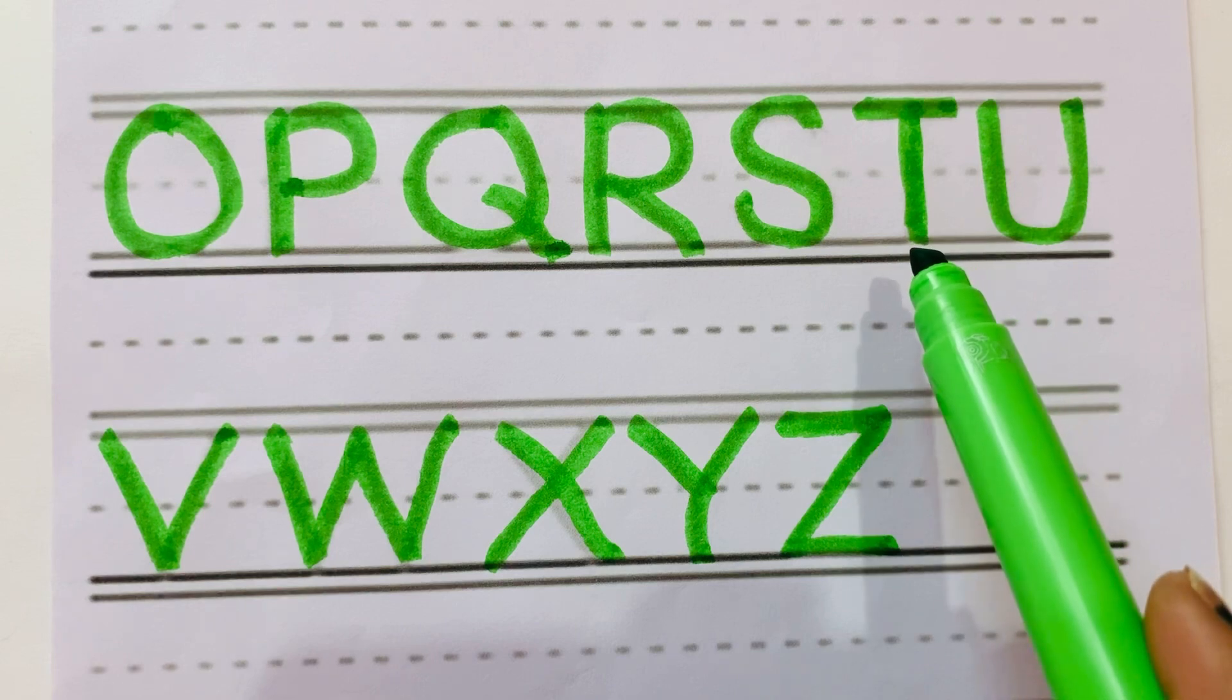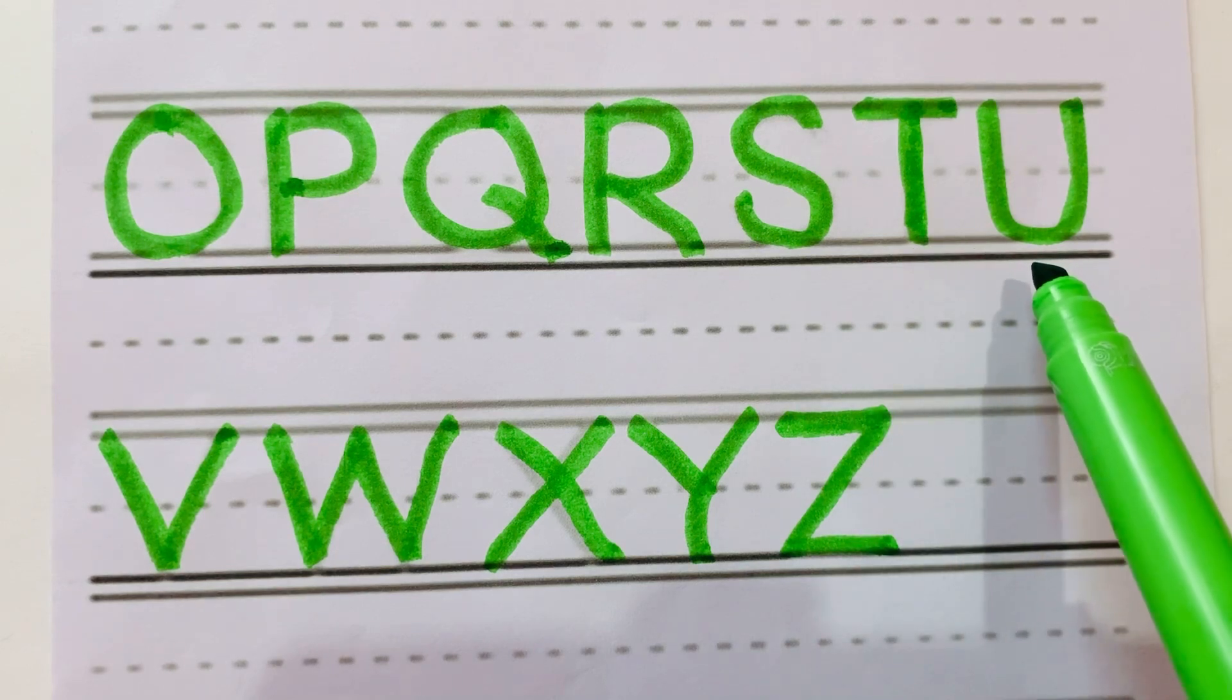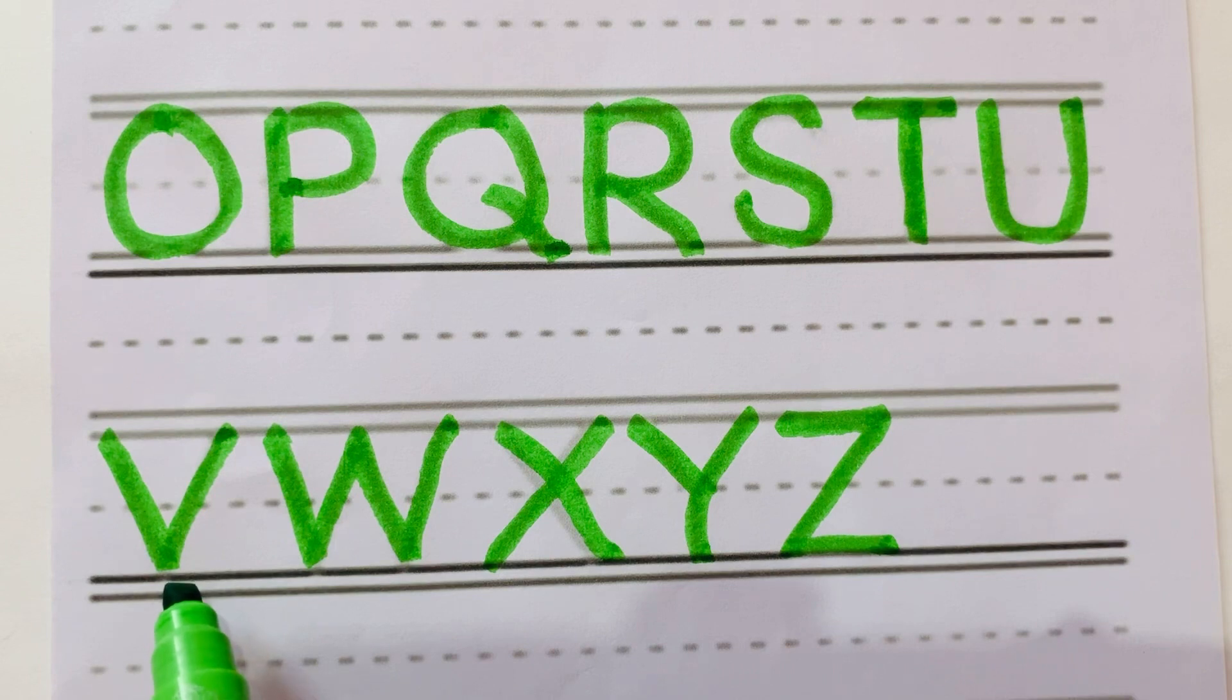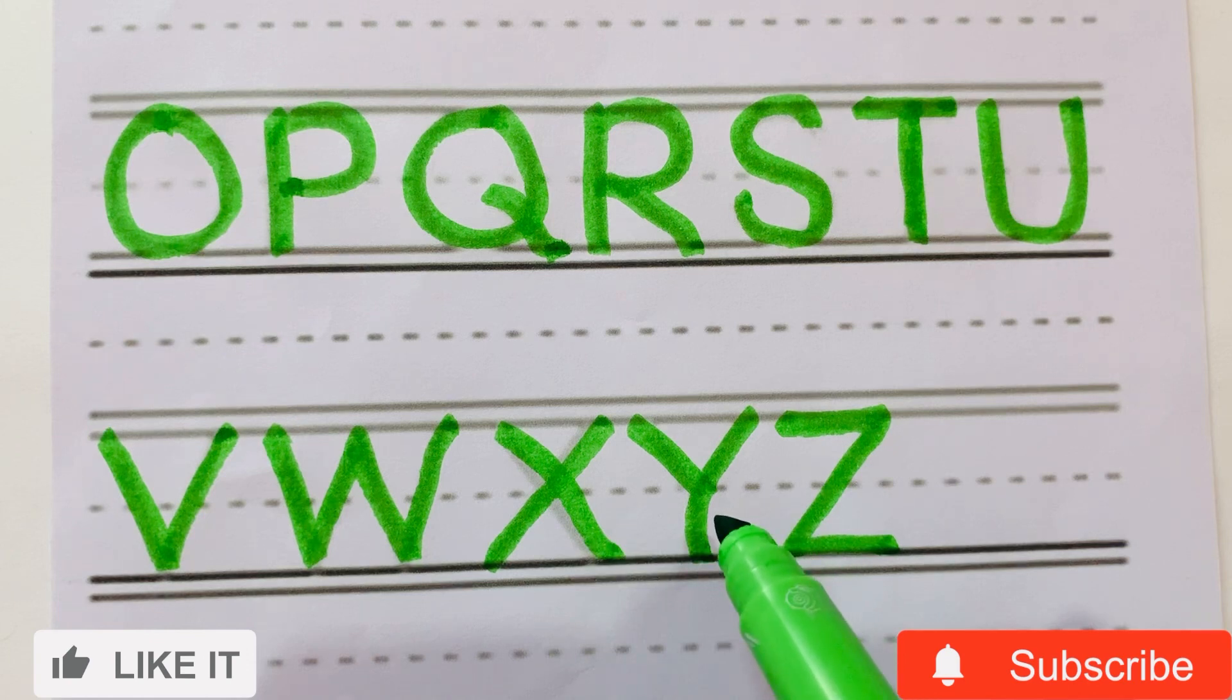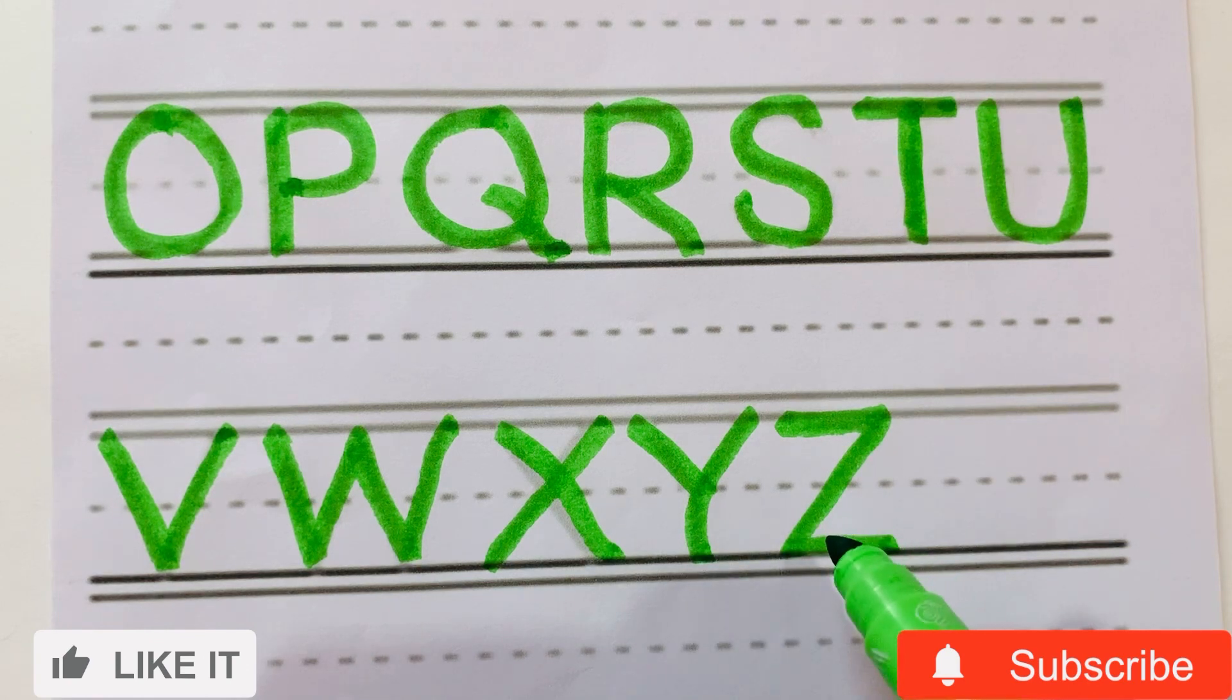T for Tiger, U for Umbrella, V for... W for Watch, X for X-Ray, Y for Yak, Z for Zebra. Thanks for watching, kids!